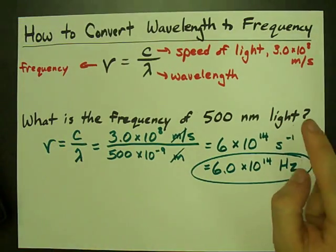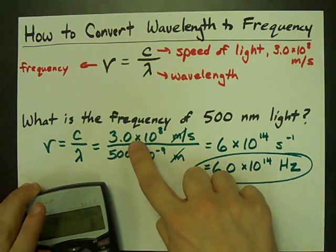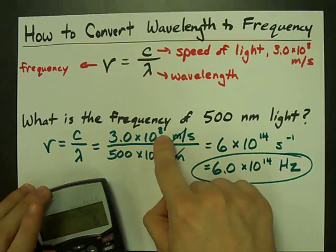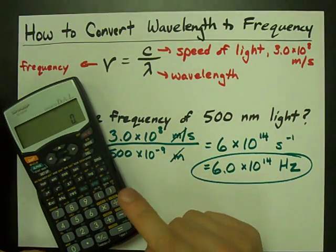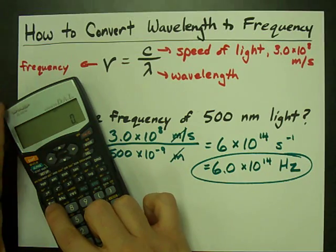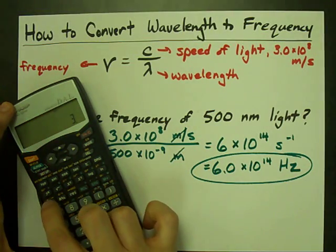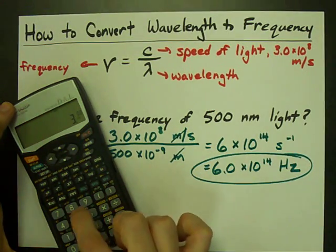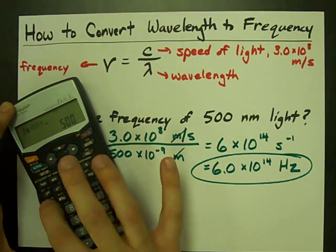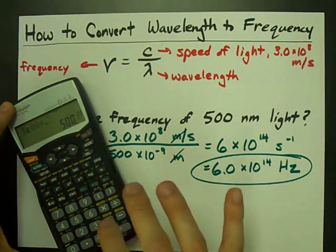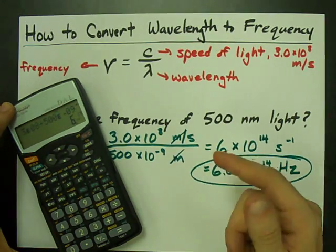One thing I do want to point out is when you're doing things like times 10 to the power of, you can use a special button on your calculator. For me, it is exp. 3 times 10 to the power of 8 divided by 500 times 10 to the power of negative 9. And it gives me the exact same answer.